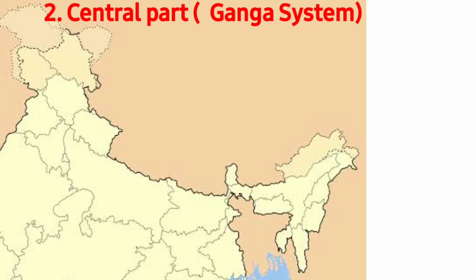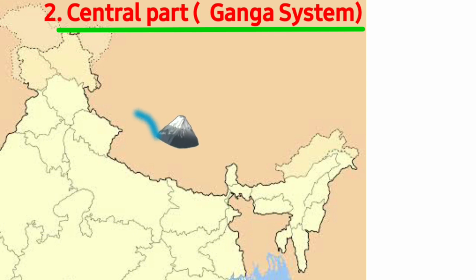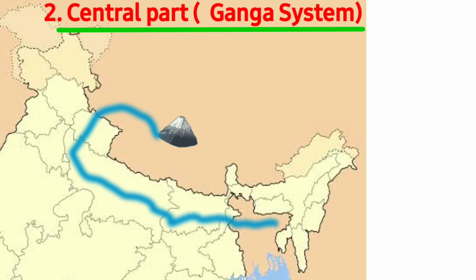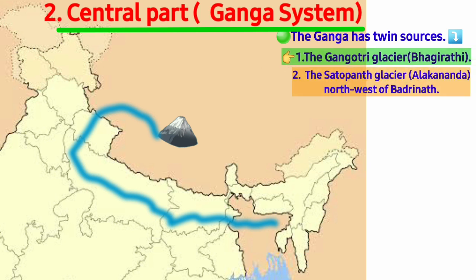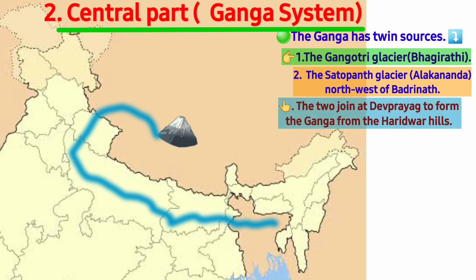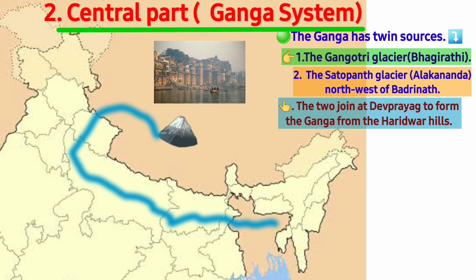The Central part of the Indo-Gangetic Plains belongs to the drainage system of River Ganga. River Ganga has twin sources — it takes birth from two glaciers. One is the Gangotri Glacier, known as Bhagirathi. Two is the Satopanth Glacier, known as Alaknanda, which is northwest of Badrinath. Both join at Devprayag to emerge as the River Ganga from the Haridwar Hills in Uttarakhand.